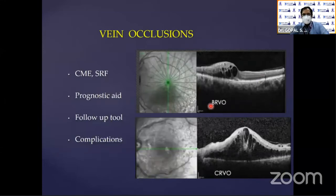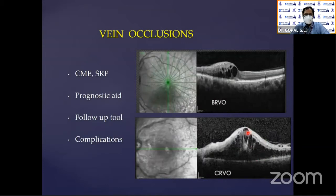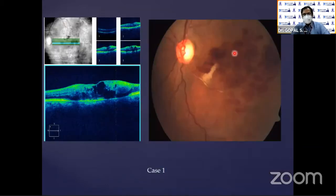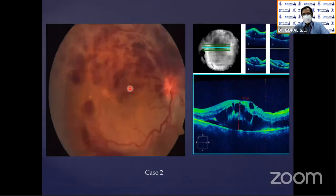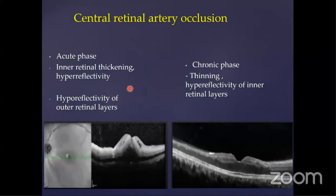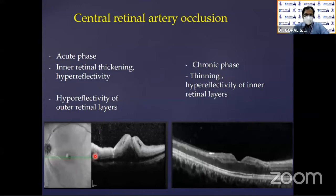In branch retinal vein occlusion, generally one side will be normal and the other side will be abnormal based on how you take the scan, whereas in central retinal vein occlusion it will be the other way around. You can see cystoid spaces with hyperreflectivity — more hyperreflectivity means more ischemia. Central retinal artery occlusion will have a huge hyperreflectivity of the inner retinal layers with shadowing beneath.